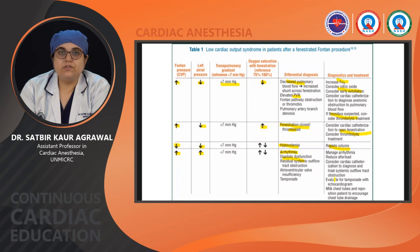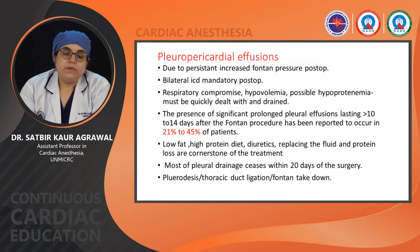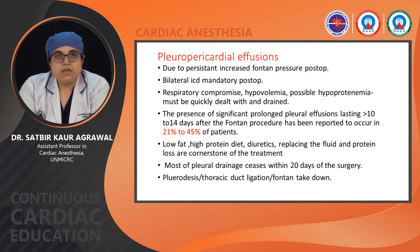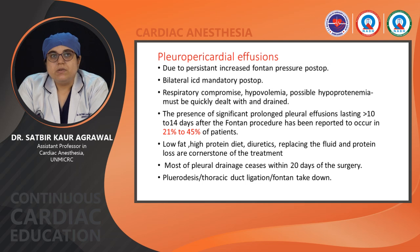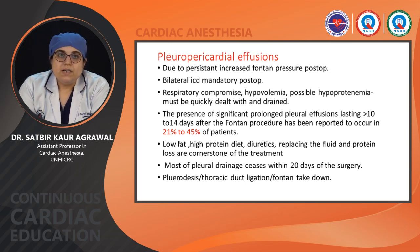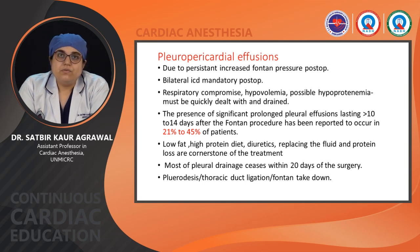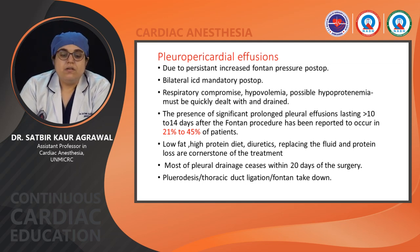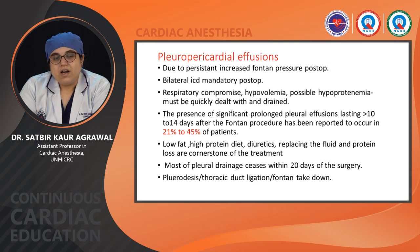Pleuropericardial effusion: patients may present with persistent increased pleural effusions because of high Fontan pressure post-op. Bilateral ICDs are mandatory. Respiratory compromise ensues with hypovolemia and hypoproteinemia. In 21 to 45 percent of patients, pleural effusion drainage lasts more than 10 to 14 days. Management includes low fat intake, high protein diet, diuretics, and replacing fluid and protein loss. Most drainage ceases within 20 days. For persistent cases, harsher decisions may be needed such as pleurodesis, thoracic duct ligation, or Fontan take-down.